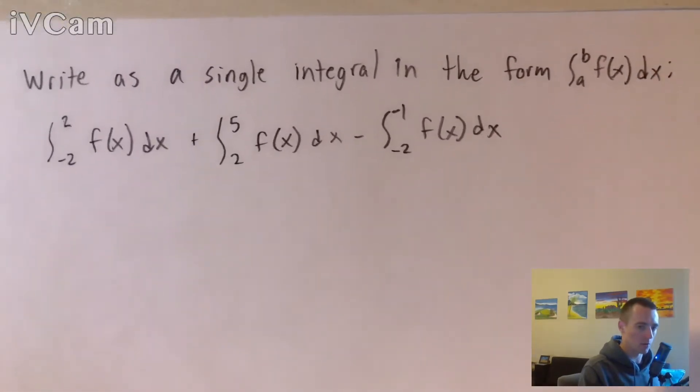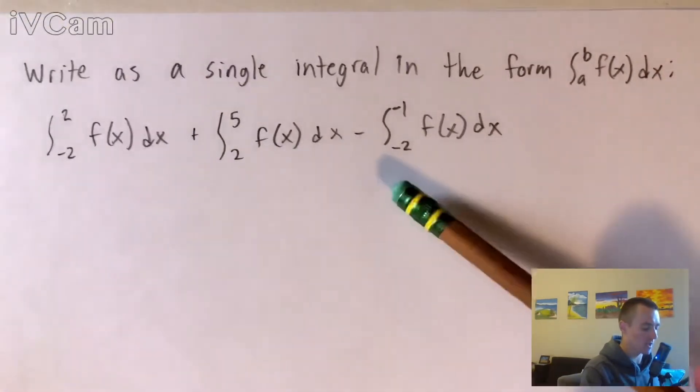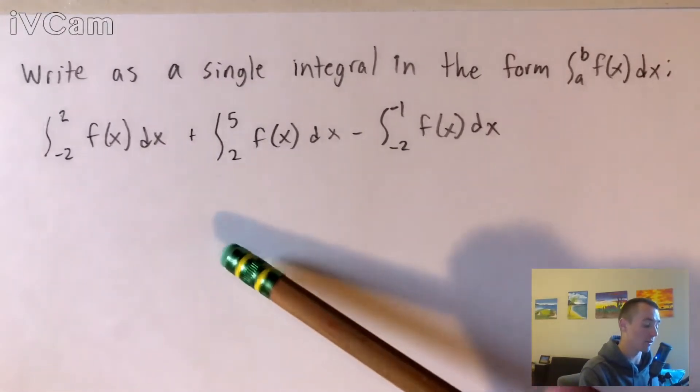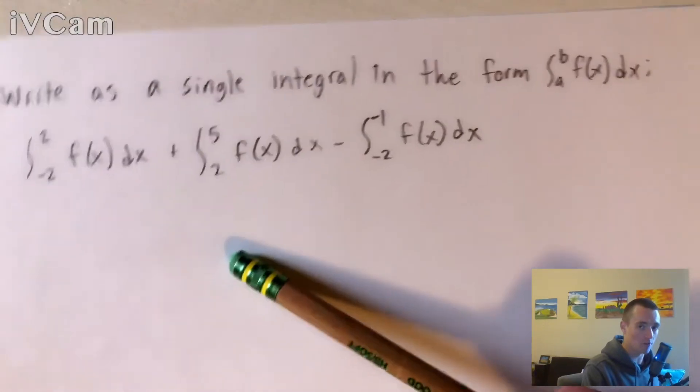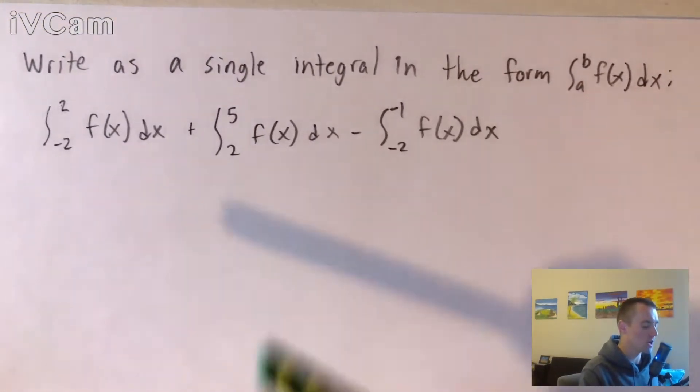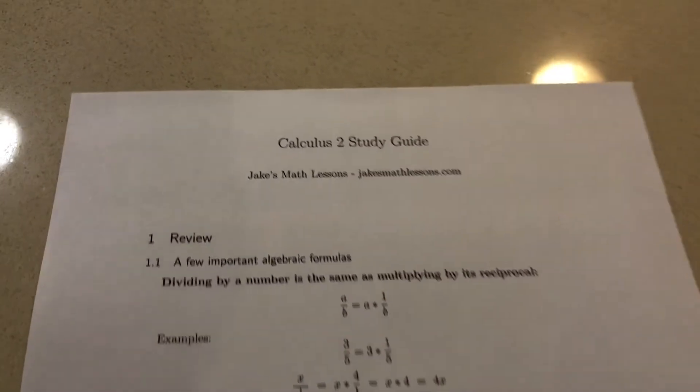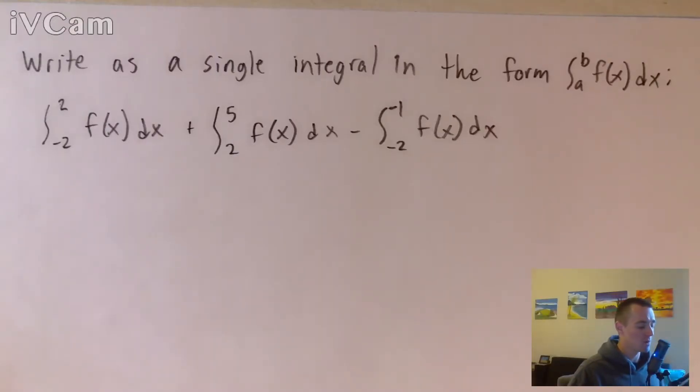Notice here we have the sum and difference of three separate integrals with all different bounds. However, they are all just the integral of f(x)dx. So what we're essentially doing here is using the limit properties from my Calculus 2 study guide. Those properties can be used to rearrange definite integrals with different bounds that are the integral of the same function.